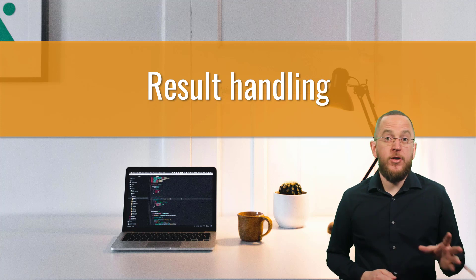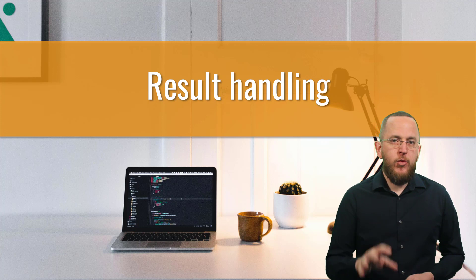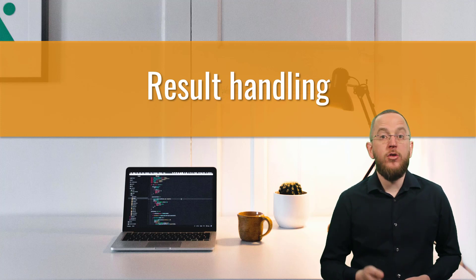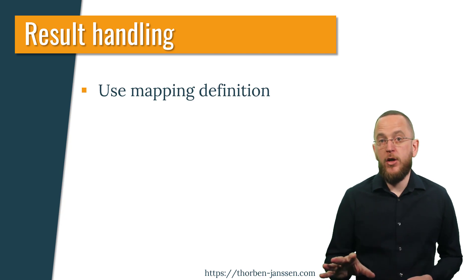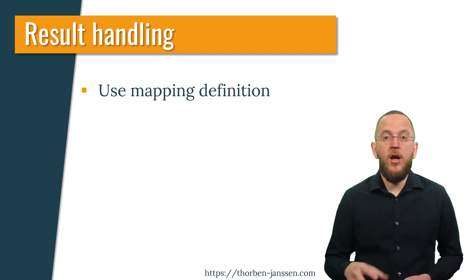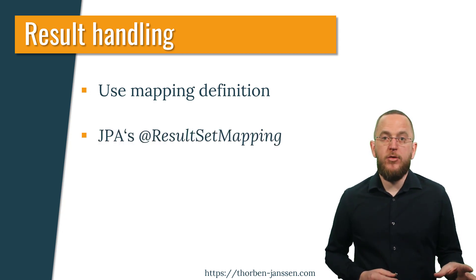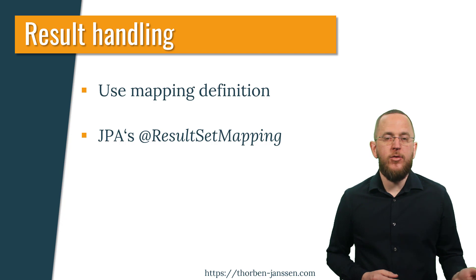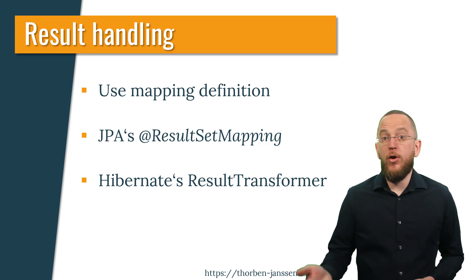As you have seen in the previous examples, your native query returns an object array or a list of object arrays. If you want to retrieve your query result as a different data structure, you need to provide additional mapping information to your persistence provider. There are 3 commonly used options: you can map each record to a managed entity using the entity's mapping definition, use JPA's SQLResultSetMapping annotation to map each result record to a combination of DTOs, managed entities, or scalar values, or use Hibernate's ResultTransformer to map each record or the entire result set.